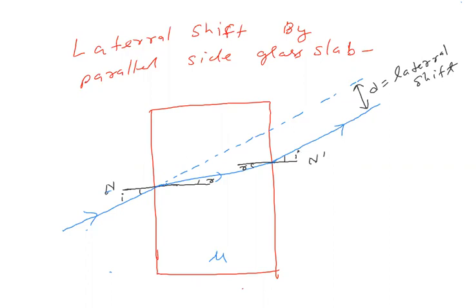इसलिए emergent ray और initial ray parallel होंगी एक-दूसरे से — I, R, R, I pattern। अब हमें lateral shift चाहिए तो यहां से इस पर perpendicular draw कर दूँ। यही distance चाहिए। यहां चेक करिएगा — यह जो angle होता है, यह angle होता है जहां पहला refraction हुआ था — वह angle होगा I minus R।